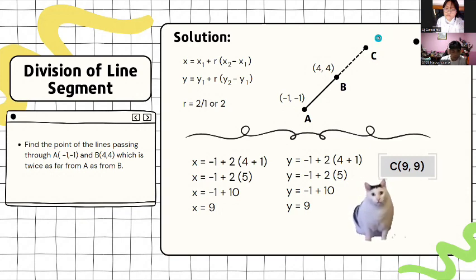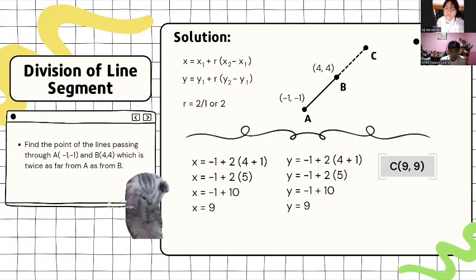So, here, we will substitute the given of negative 1 plus the ratio 2, and quantity 4 plus 1, and simplify it by adding 4 plus 1 into 5 and multiplying it by 2, and negative 1 plus 10 is equal to 9. And, this is the same as in y, due to the fact that the given is mostly similar of x and y, which will result into the point C of 9 comma 9.